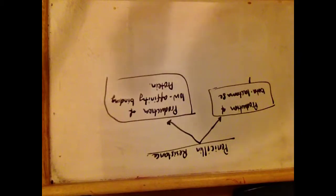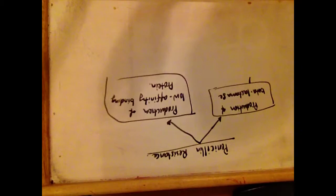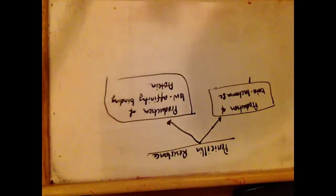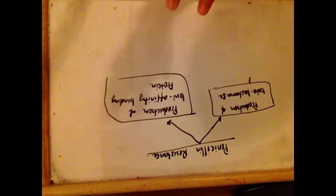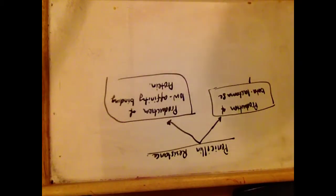By producing the low affinity binding proteins, penicillins are unable to bind to the binding proteins on the bacteria, therefore rendering the penicillins ineffective as well.